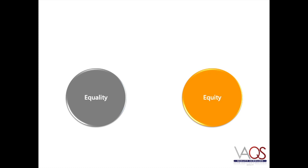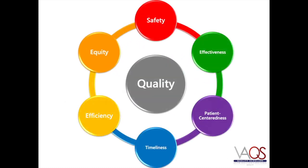Only recently has health care improvement become focused on equity rather than equality. And this is part of the reason the United States spends more on health care per person than any other advanced nation and has much poorer population health outcomes. As identified by the National Academies of Medicine, there are six dimensions of health care quality. Here, we'll focus on how we can target equity to improve the standards of care and the health outcomes of the populations that we serve.